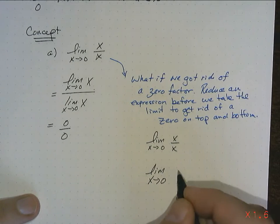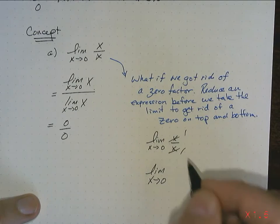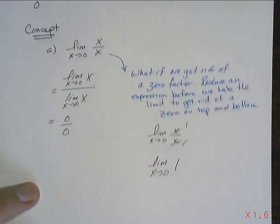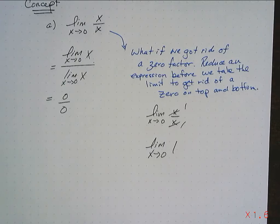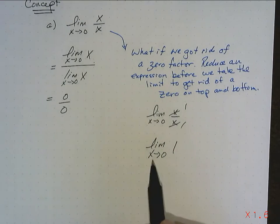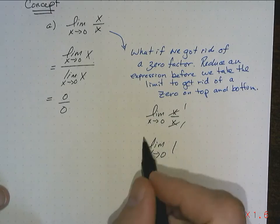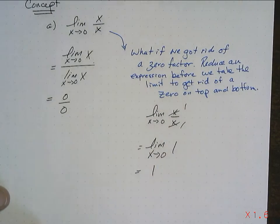So what that means I can do is I can do this before I take the limit. I can reduce the top and reduce the bottom, and I can get 1. And so now if I take the limit as x approaches 0, 1 doesn't give a darn what's happening, and we get an answer of 1.